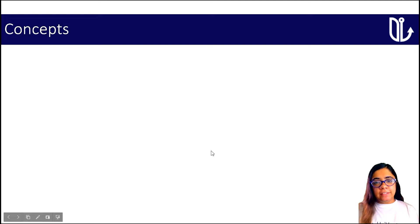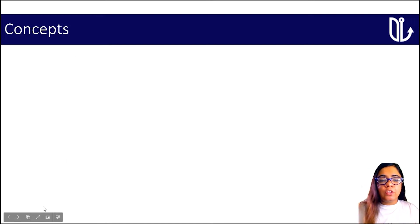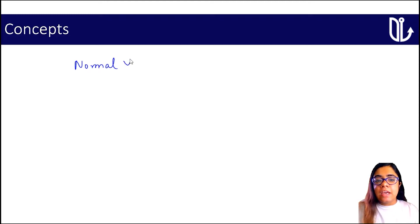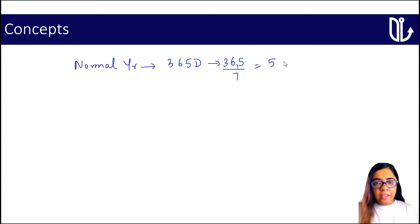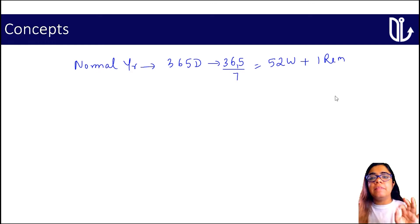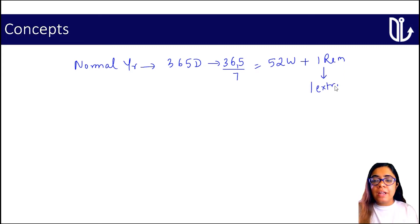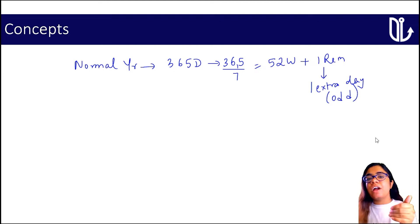When you talk about calendars, first of all, what comes to mind is a normal year and a leap year. A normal year has 365 days. If I convert this into weeks, 7 days make a week, so I'll divide 365 by 7. I get 52 weeks, but there is one remainder remaining because 364 is divisible by 7. This one remainder is called one extra day, which is known as an odd day. So a normal year has one extra day or one odd day.